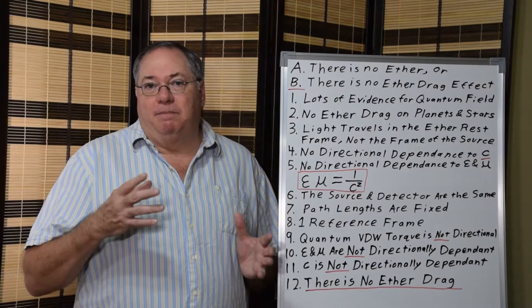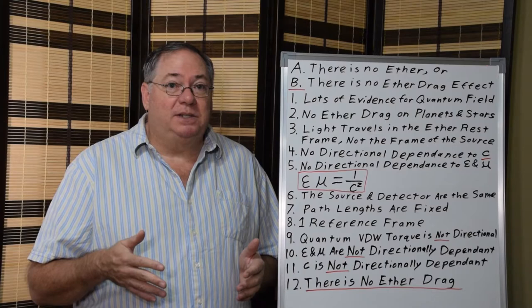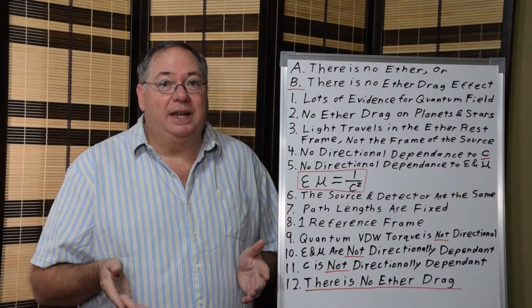The path lengths are fixed. They're not moving. If the path lengths didn't move, then you would, of course, have fringes. We know that from numerous other experiments. But if you have fixed path lengths, you don't get fringes, which is what the Michelson-Morley experiment showed.